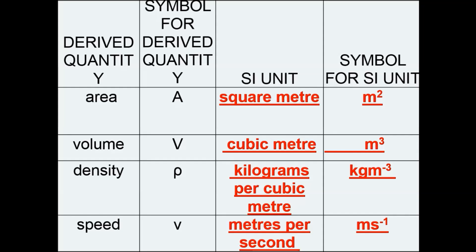For example, the SI unit for area is square meter or m². The SI unit for volume is cubic meter or m³, which is length times breadth times height. The SI unit for density is kilograms per cubic meter, with symbol kg m⁻³.